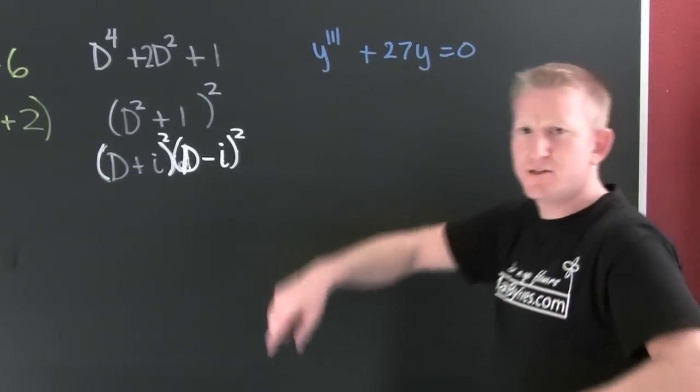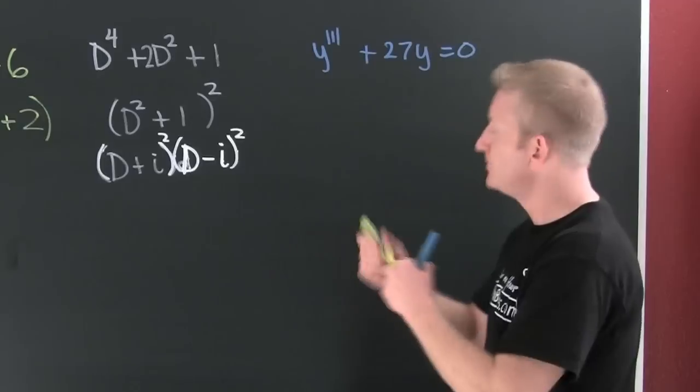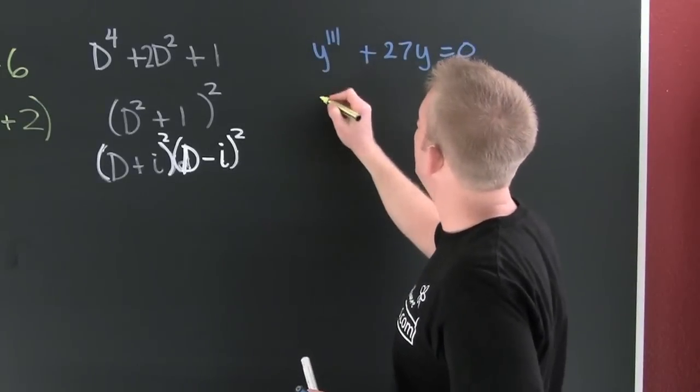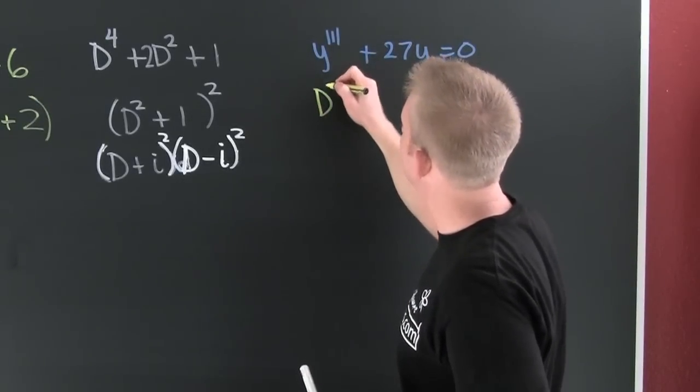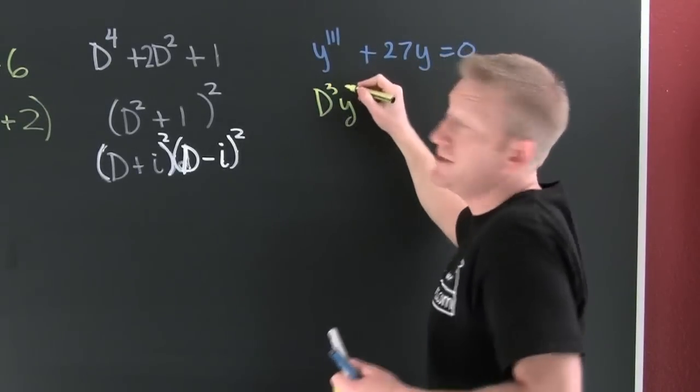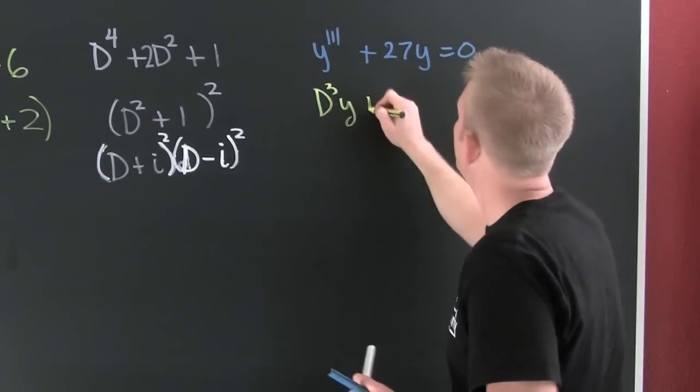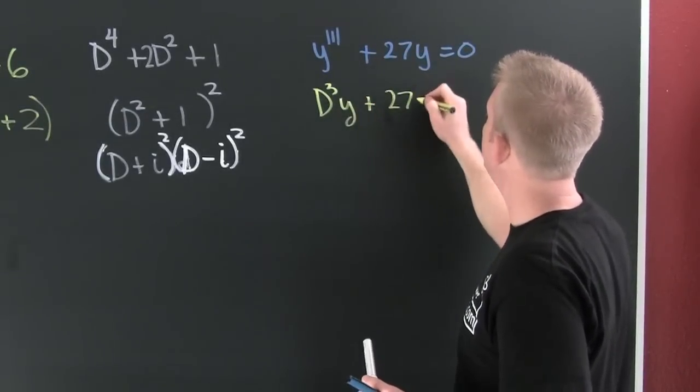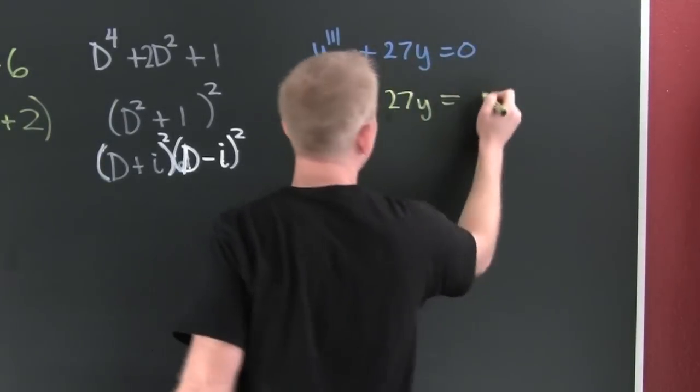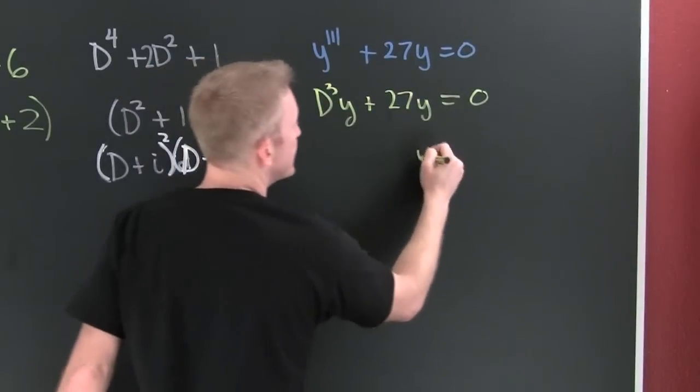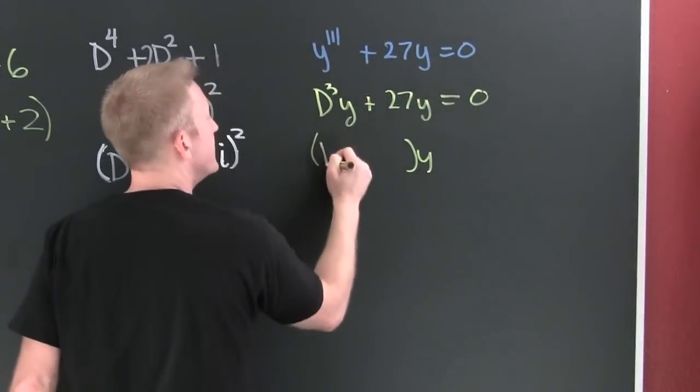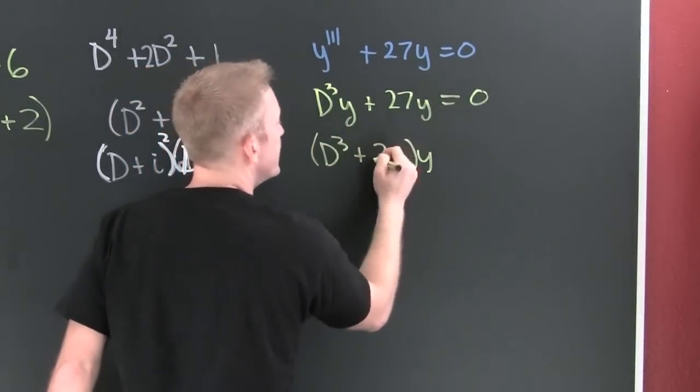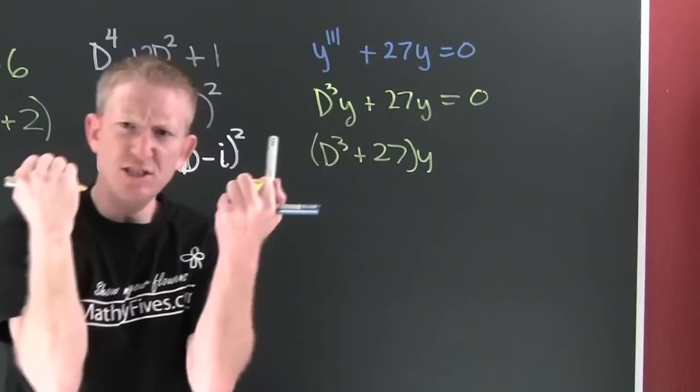I first need to write this in operator notation. The third derivative of y using our new notation plus 27 why. Yes, why is out. This is D to the third plus 27, and again it's screaming.